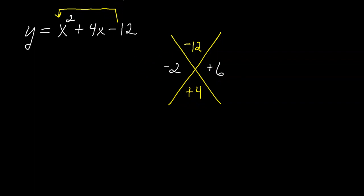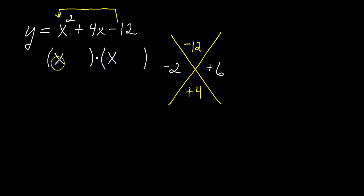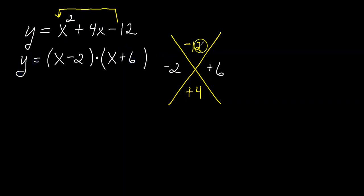Now I can go ahead and factor this. I'll put two sets of parentheses, with x and x — since x times x is x squared — then slide in the minus 2 and the plus 6. Now, really careful: this shortcut works when there's no number in front of the x squared. If there were a number like 3, 4, or 5 in front, there would be extra steps and it would be more difficult.